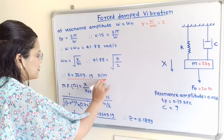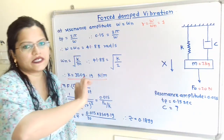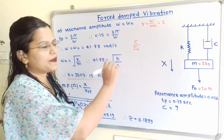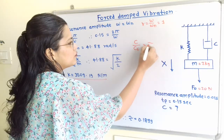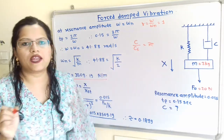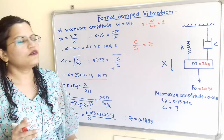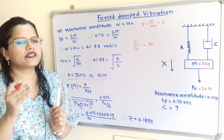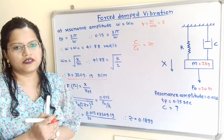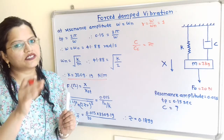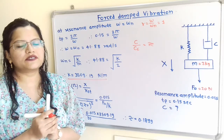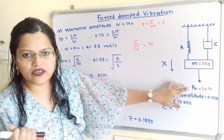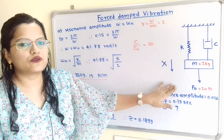Now we have to find the value of C. We know that the ratio of damping coefficient C divided by critical damping coefficient C_c equals zeta. So we will first find out the value of zeta. This is a force damped vibration problem, so we will use the formula for the magnification factor. Magnification factor (denoted Ω) is the ratio of amplitude due to harmonic force divided by amplitude due to static force.